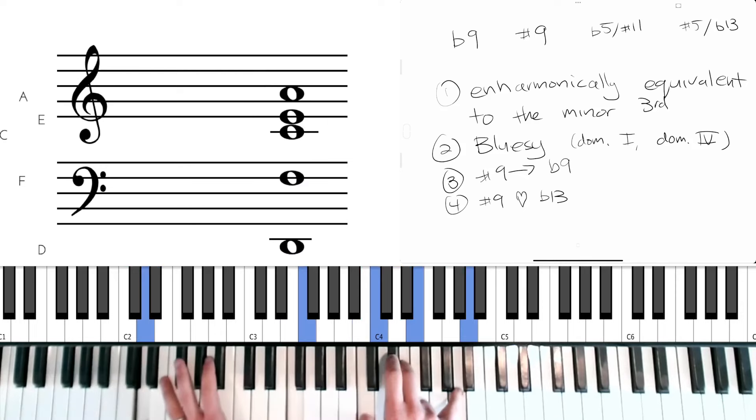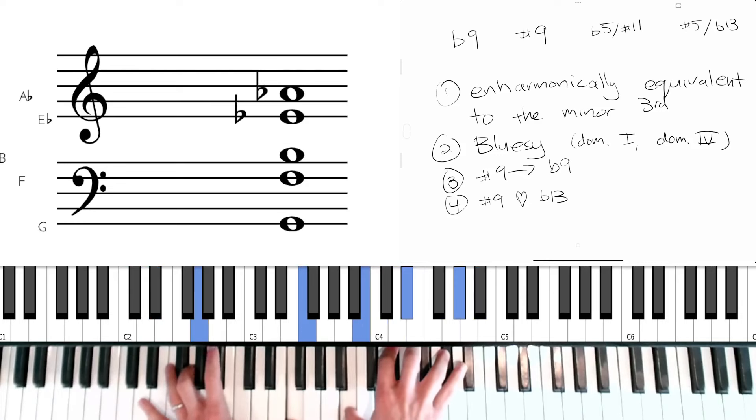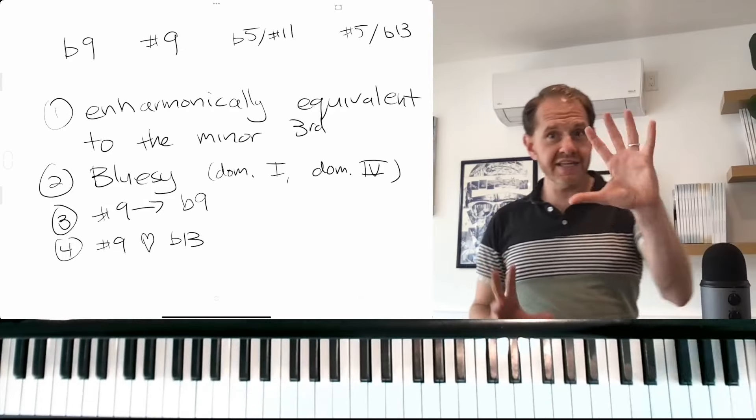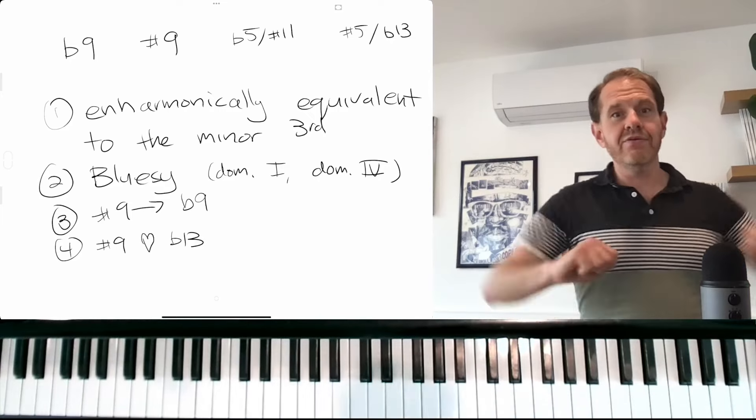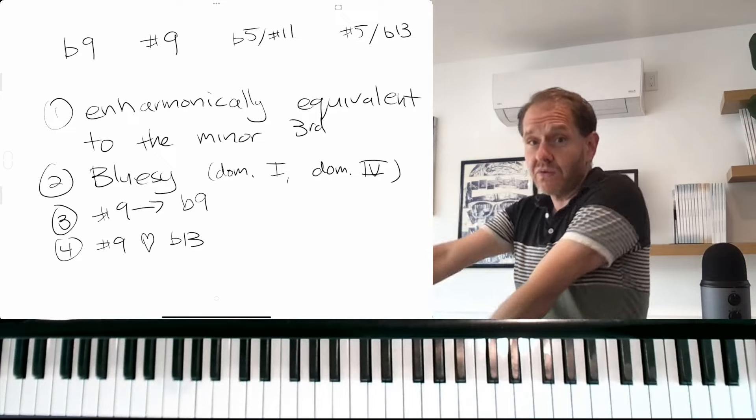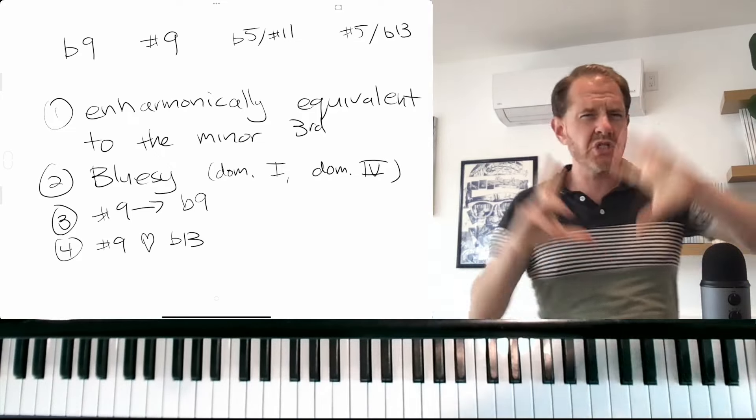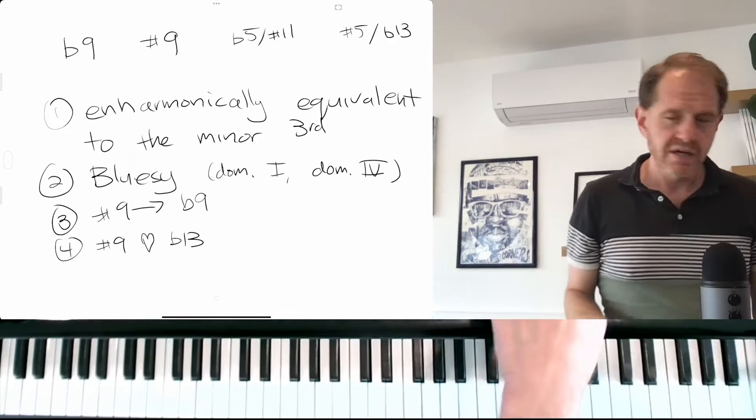So now with combining three and four, check this out. That sounds really good, right? We've taken that sharp nine that didn't necessarily sound so great and we've made it resolve to the flat nine so it can then resolve to the fifth of the one chord. And we've added the thirteenth to get rid of that weird minor triad interval thing that was happening that I think can be distracting.